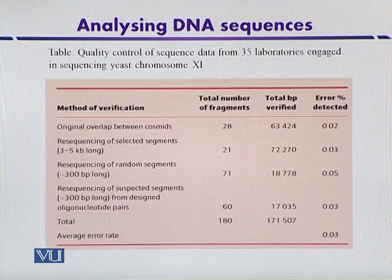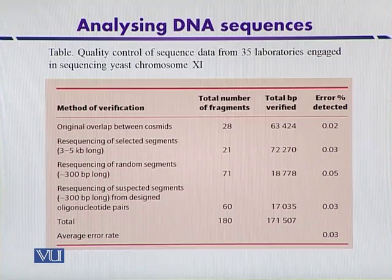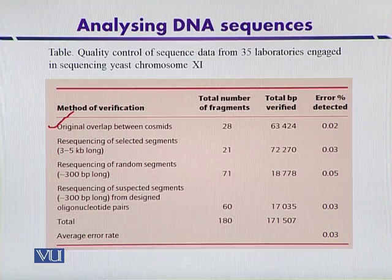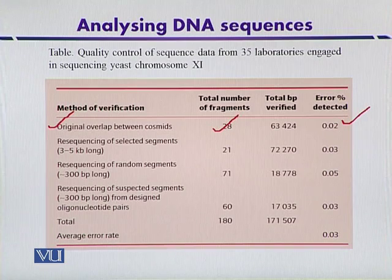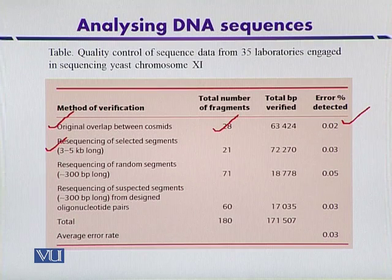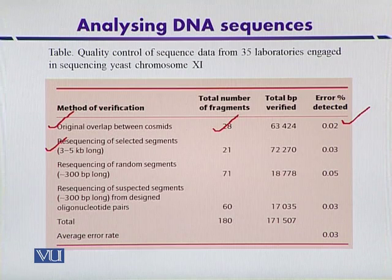The quality control procedures they used can be explained with a table related to sequence data quality from the 35 laboratories engaged in sequencing yeast chromosome 11. Different verification methods were used. For the original overlaps between cosmids — used as vectors — around 28 fragments totaling approximately 63,000 bases were verified, with a detected error of about 0.02%. Additional verification included resequencing of selected fragments of 3 to 5 kilobases, resequencing of random segments of around 300 base pairs, and resequencing of suspected fragments, giving an average error rate of around 0.03%.